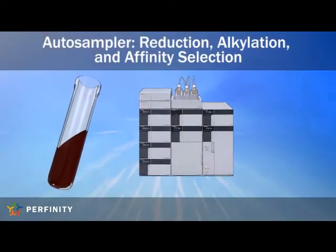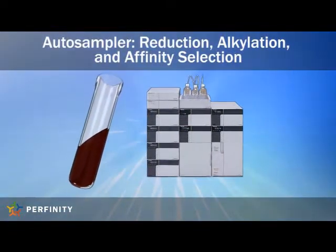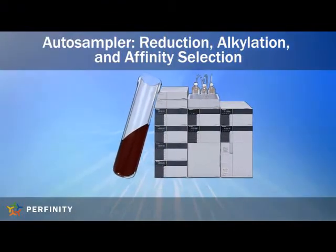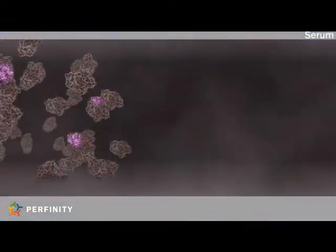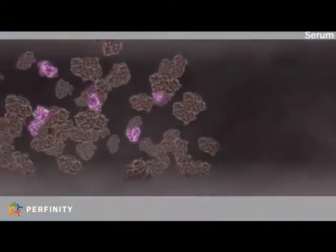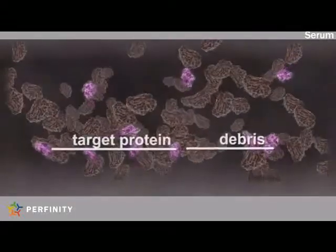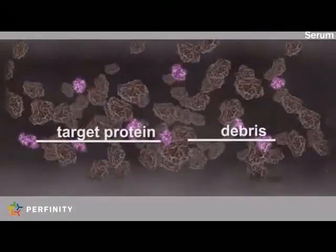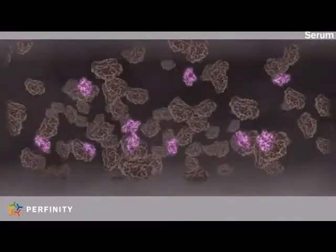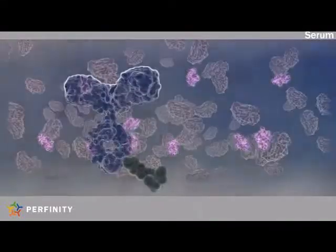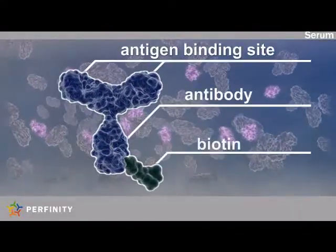Serum samples are initially loaded into the autosampler, where reduction, alkylation, and antibody addition occur. Serum is a complex biological matrix consisting of more than 100,000 components. In order to quickly separate target proteins from the complex biological matrix, a biotinylated antibody is added to the sample.